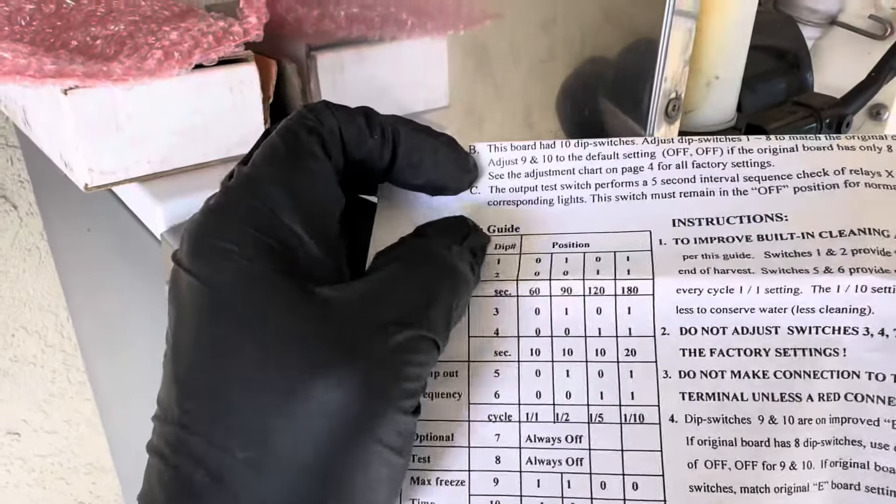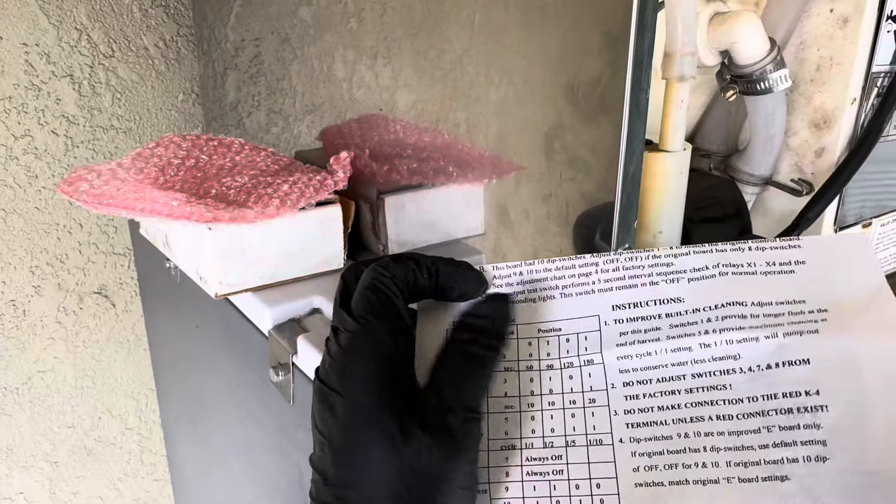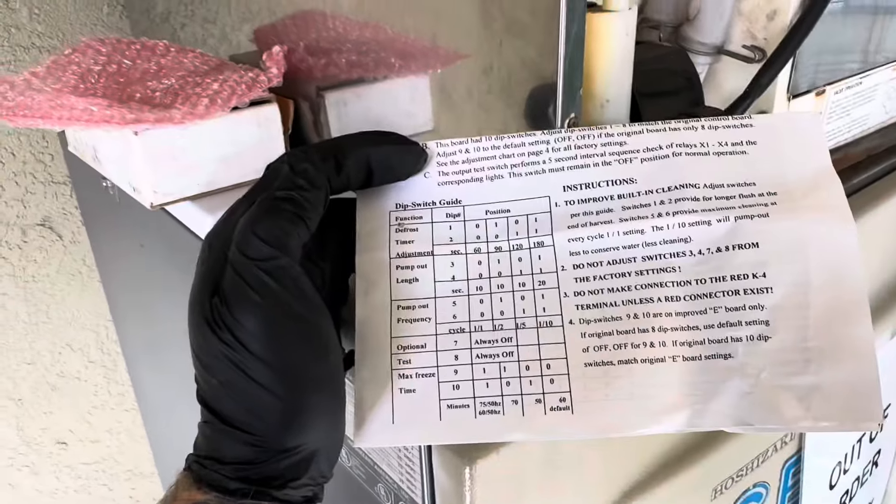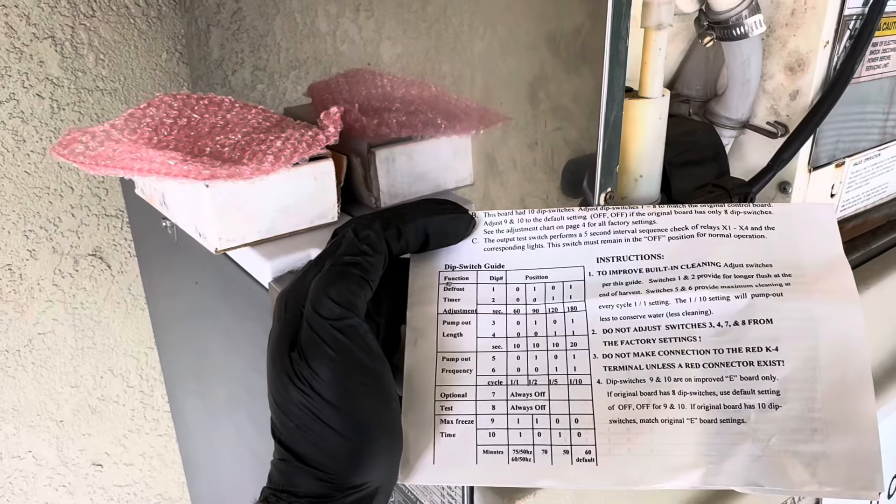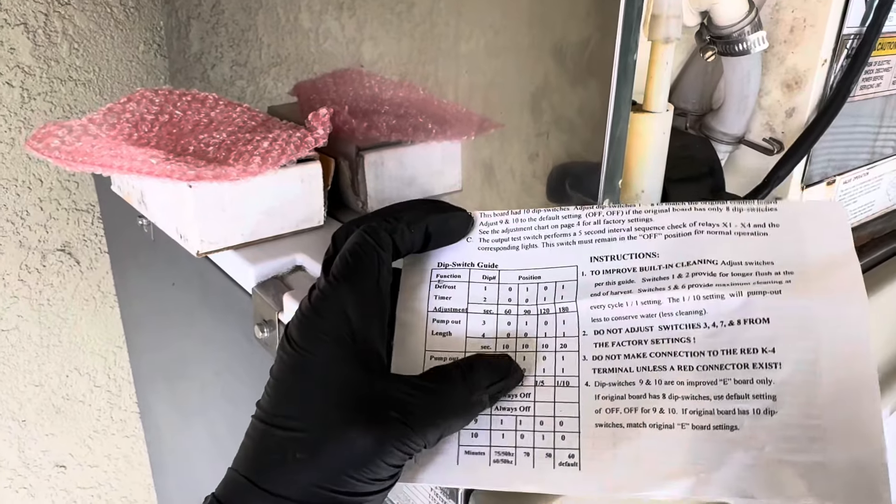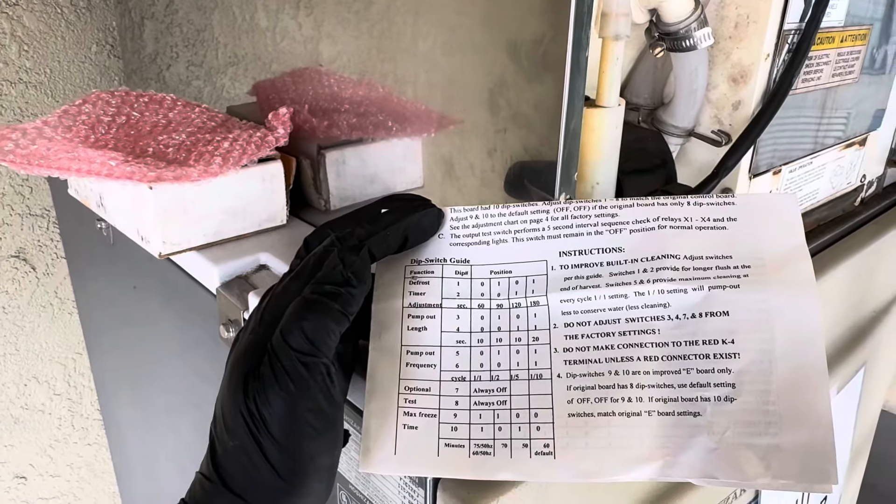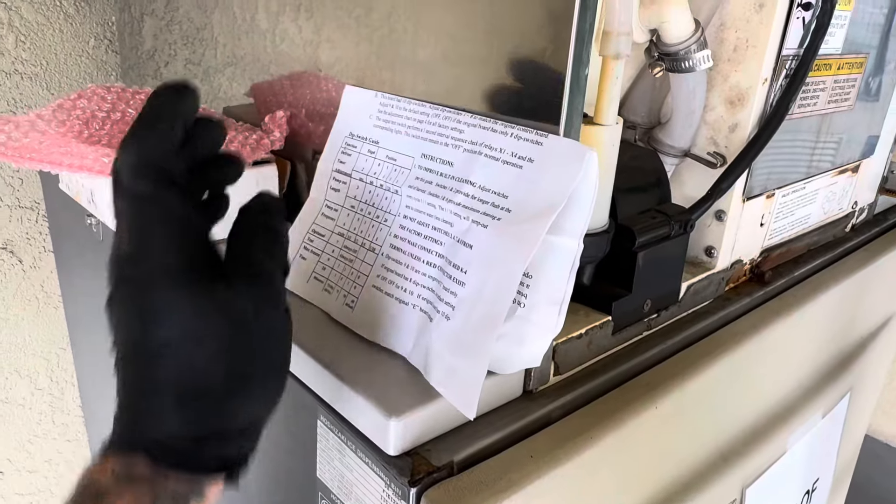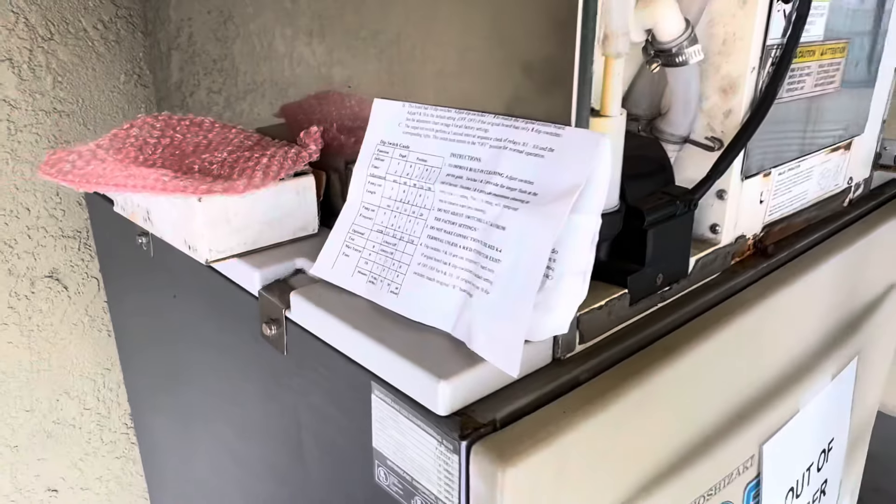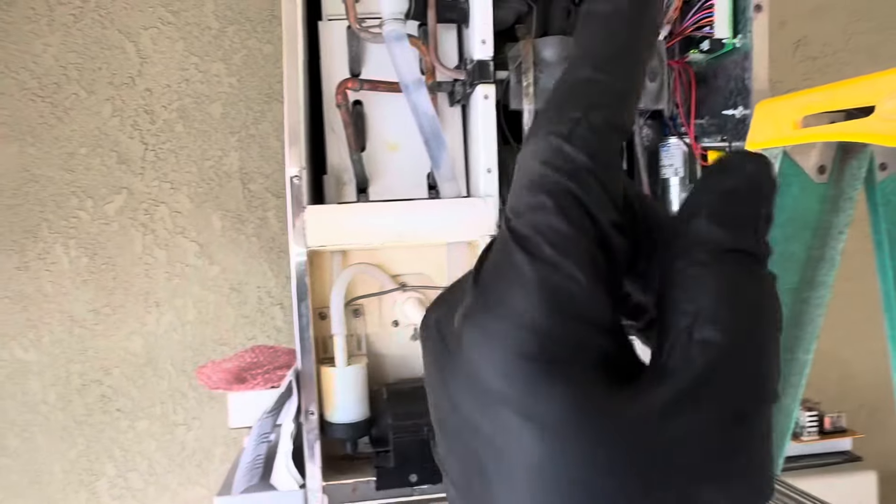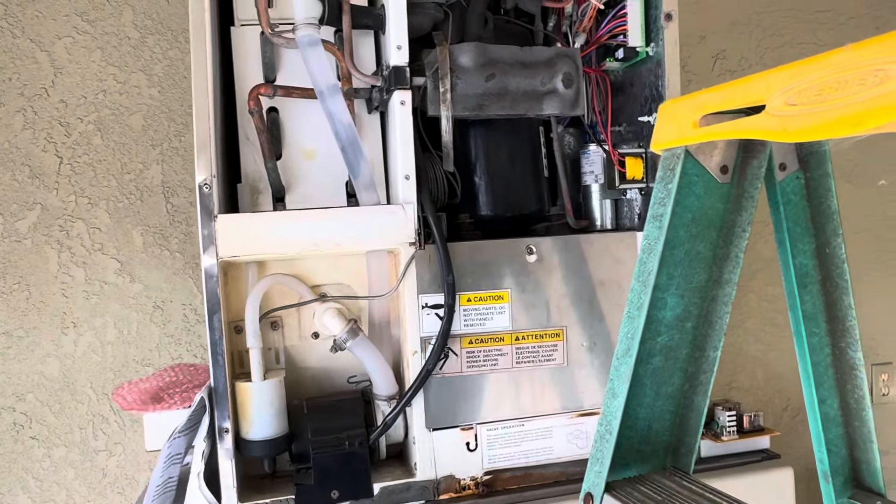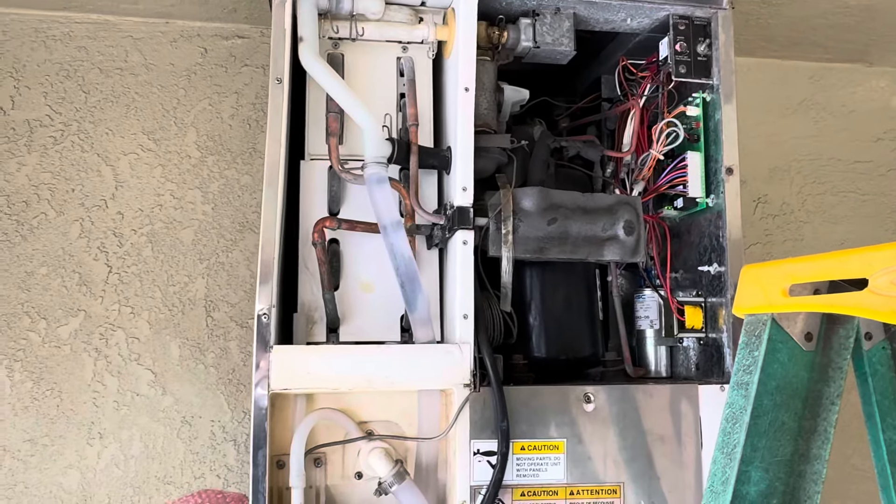You can change these settings up too. If your machine's using too much water and they're getting on you for water, you can change up some of these settings, especially the pump out frequency. You probably want to put 5 and 6 at 1 and 1. That might save you some water. They've been really hitting the water usage hard, and that's a problem with Hoshizakis, is the water usage compared to like a Manitowoc.